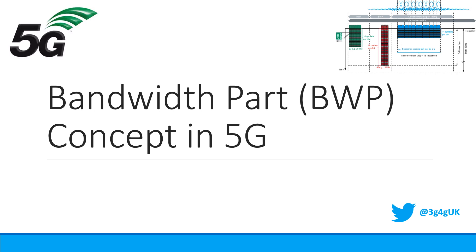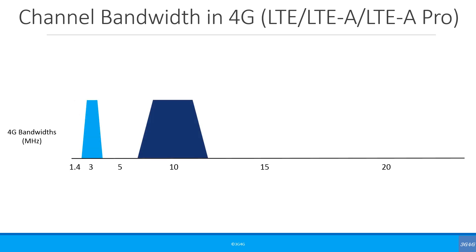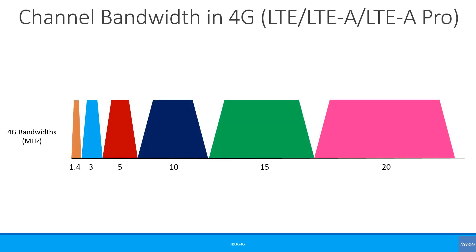Hello everyone, welcome to this short presentation on bandwidth parts in 5G, as we keep on getting asked about this. Let's start with channel bandwidth in 4G. In LTE, the channel bandwidth could be 1.4 MHz, 3 MHz, 5 MHz, 10 MHz, 15 MHz, and 20 MHz. Please do not get confused about carrier aggregation — I am just talking about the possible channel bandwidths for a 4G network. The maximum bandwidth is 20 MHz.